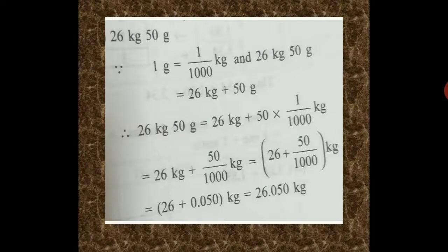What about 26 kg 50 gram? 1 gram is equal to 1 by 1000 kilogram. And 26 kg 50 gram is equal to 26 kg plus 50 gram, which is equal to 26 kg plus 50 into 1 by 1000 kilogram, equal to 26 plus 0.050 kg, which is equal to 26.050 kg.